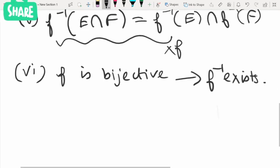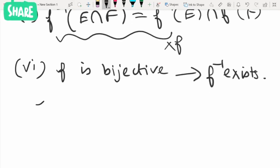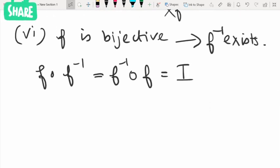And what about its composition with the inverse? f composition f inverse is equal to f inverse composition f, and this is equal to the identity function. So these are some results on inverse functions. Thank you, see you next time.